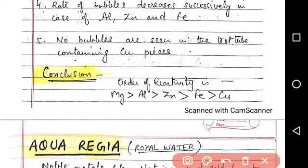So what is the conclusion? The conclusion is the order of the reactivity of all these metals is magnesium is the most reactive, aluminium is less reactive than magnesium. Then zinc is still less reactive than aluminium. Iron is still less reactive than zinc. And copper is the least reactive because we cannot see any air bubble in the test tube containing copper because copper cannot react with HCl in any case.